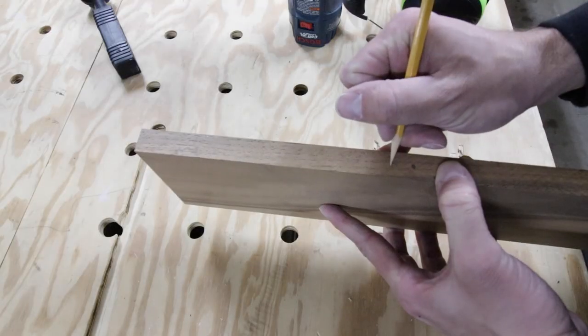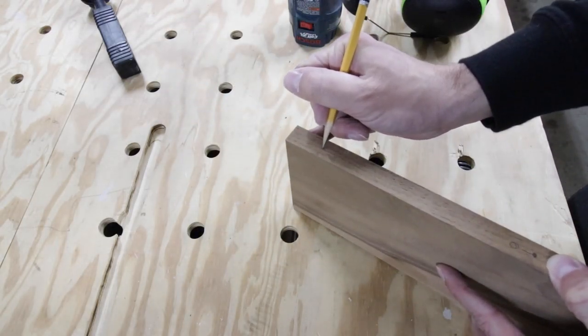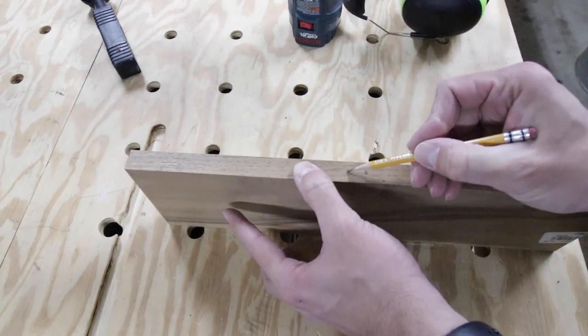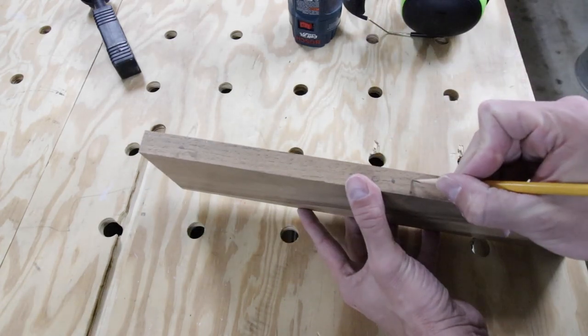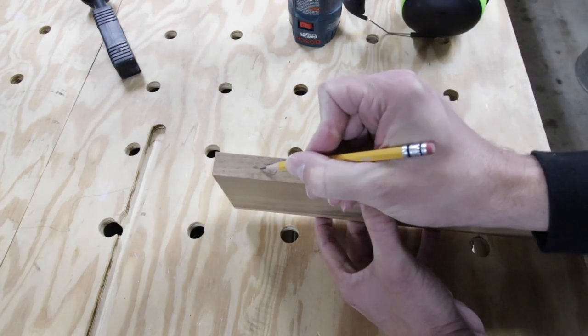Next, I made my marks where I want the router keyhole to go. Now it's important to remember you're gonna plunge in that circle and then go down the line a little bit to where the bolt is gonna stick into the hole, so you have to kind of think that through when you're making your marks.